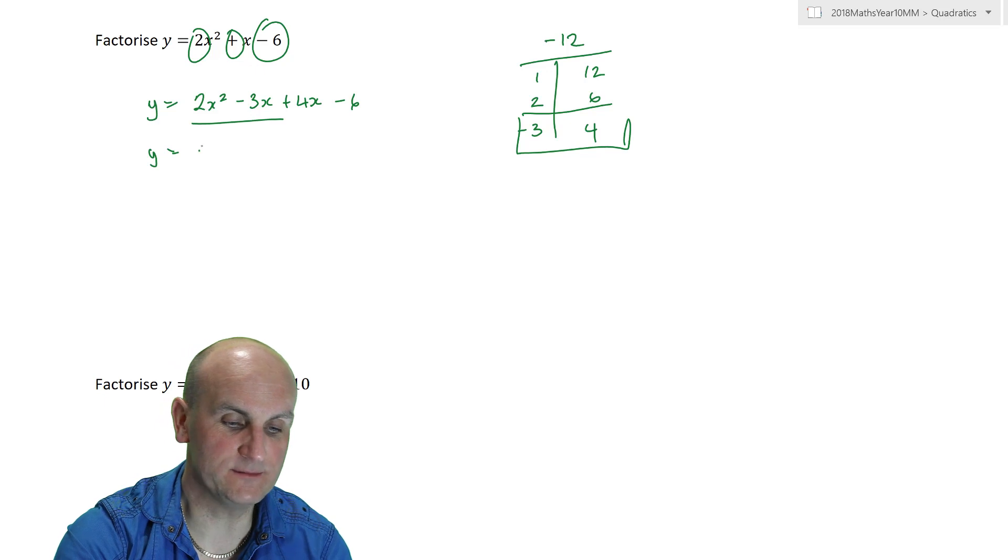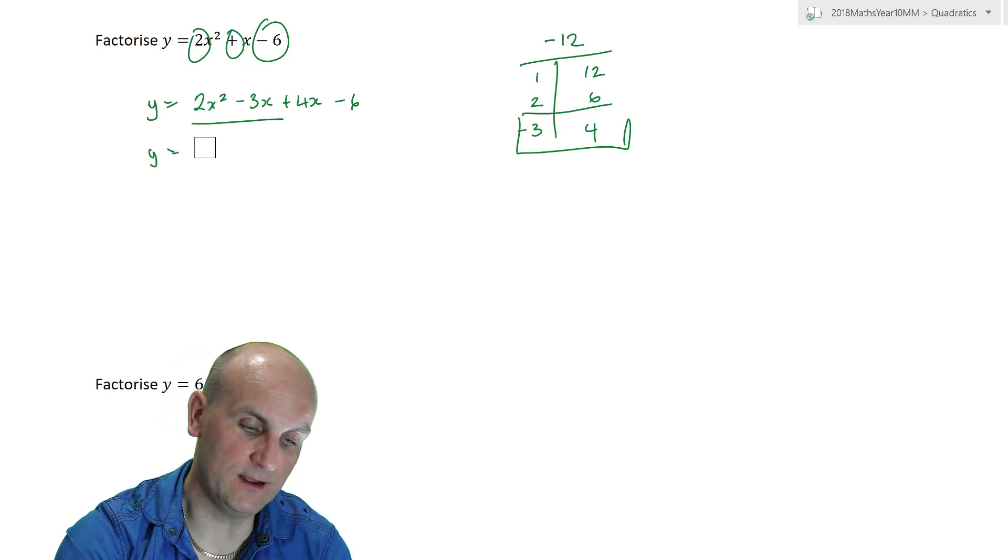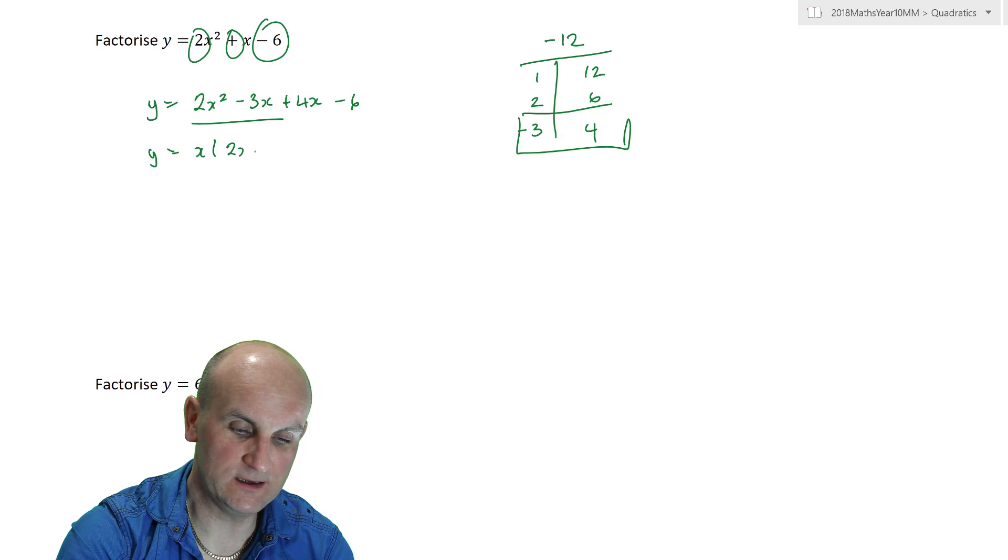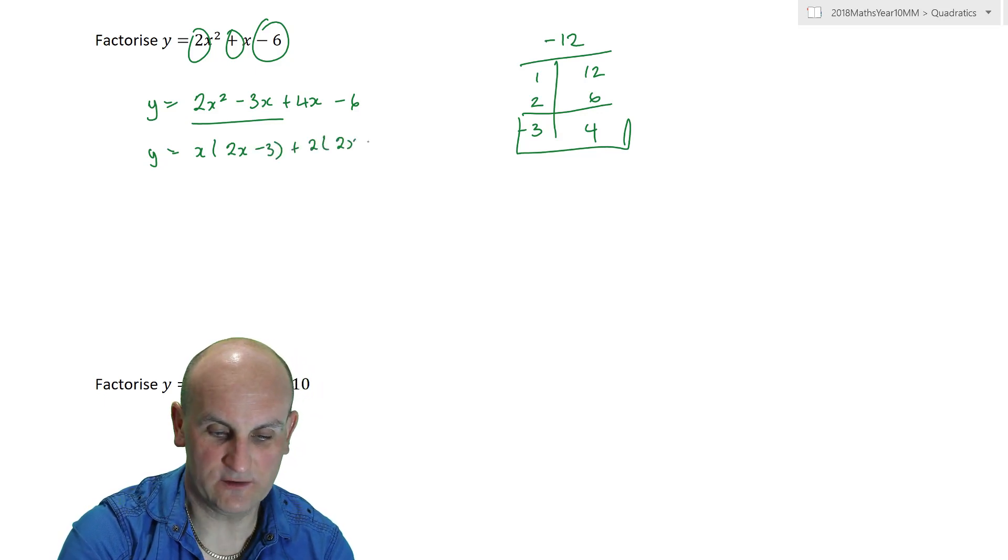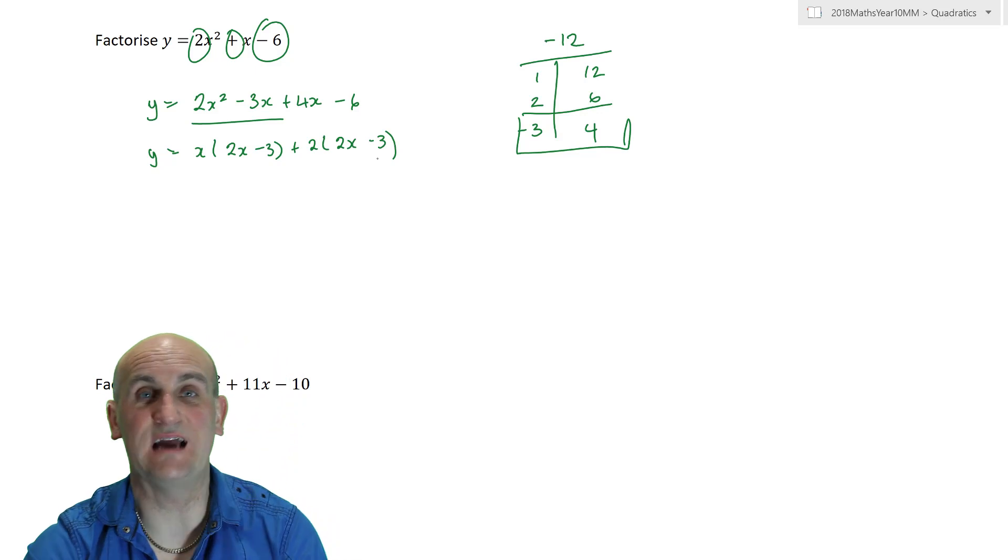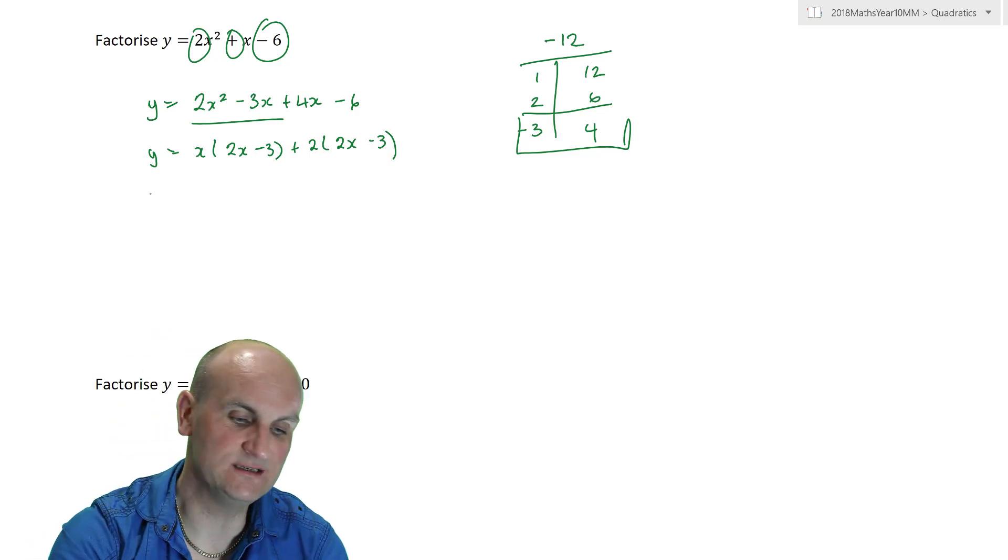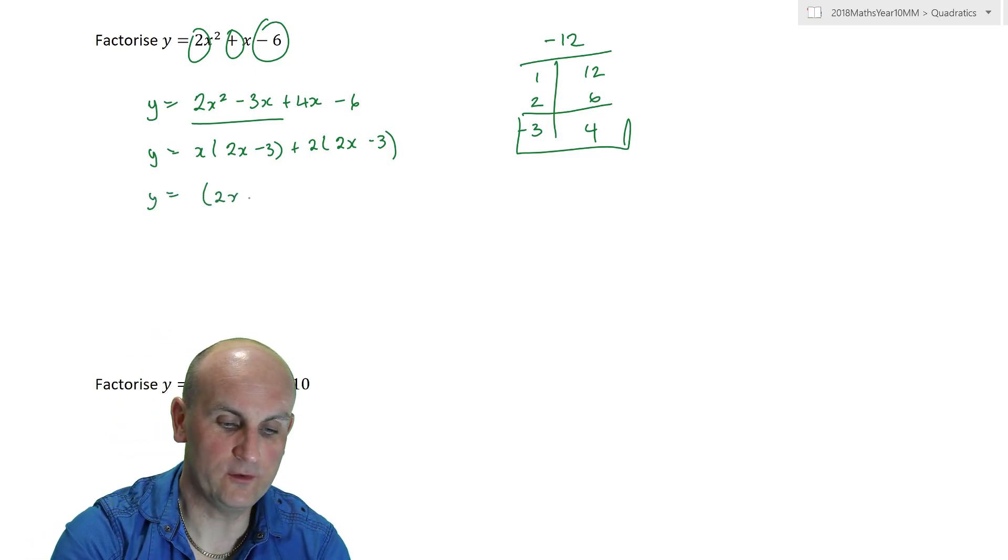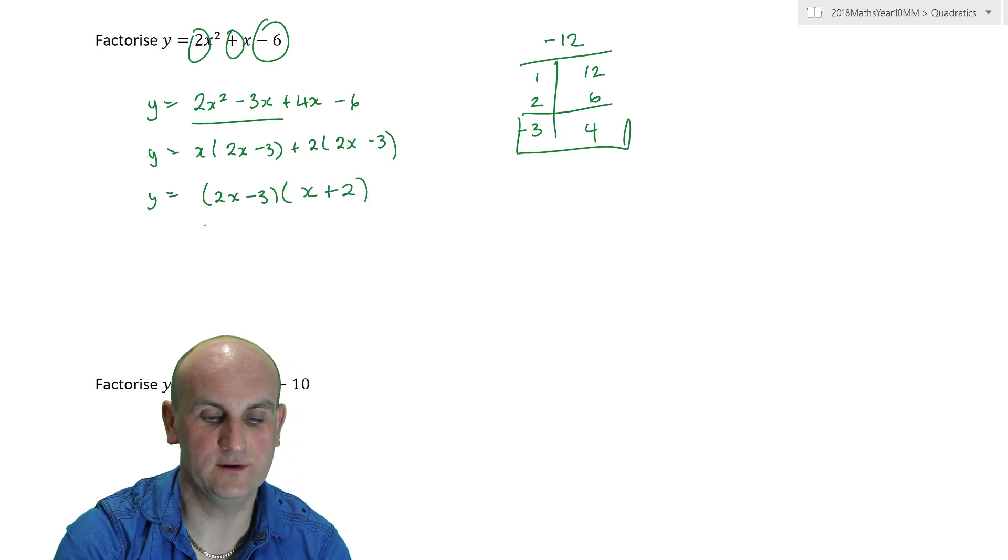Y is equal to 2x squared minus 3x plus 4x minus 6. Factorized by grouping. I'm just going to take, oh, I can't take out a number in this case. Let's take out only the x, which gives me 2x minus 3. And, take out plus 2, which gives me 2x minus 3. Now, the point of it is you have to take out the maximum you can. The highest common factor from each pair of terms. Otherwise, this isn't going to work. So, 2x minus 3, because that's the common factor. And, x plus 2, which is left.